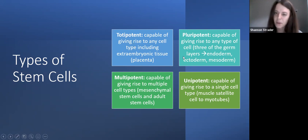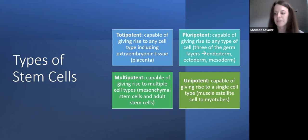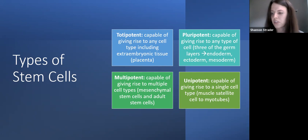The big thing in the clinical world is pluripotency. This is the ideal, perfect cell type. Pluripotent cells can give rise to any type of cell in the three germ layers — endoderm, ectoderm, and mesoderm.